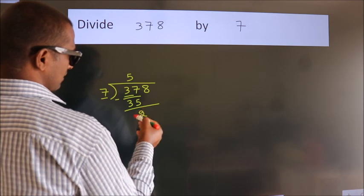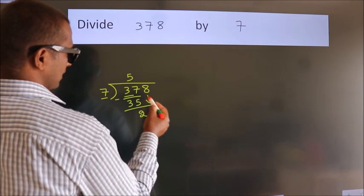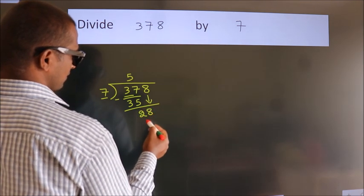After this, bring down the next number. So 8 comes down. So 28.